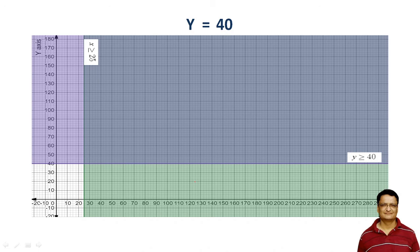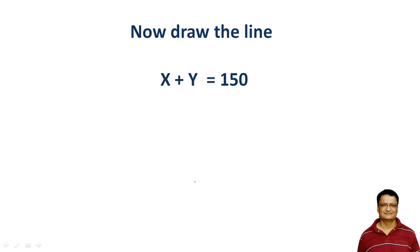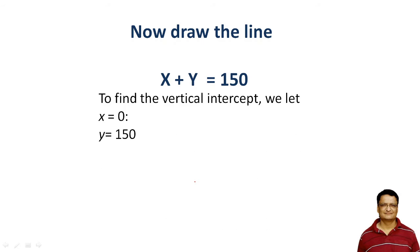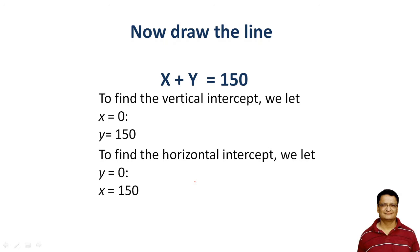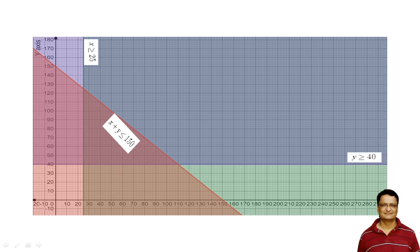The third constraint is x + y = 150. To plot this line, we find the intercepts: setting x = 0 gives y = 150, and setting y = 0 gives x = 150. So we plot the two points (0, 150) and (150, 0) on the graph, which gives us the third line.